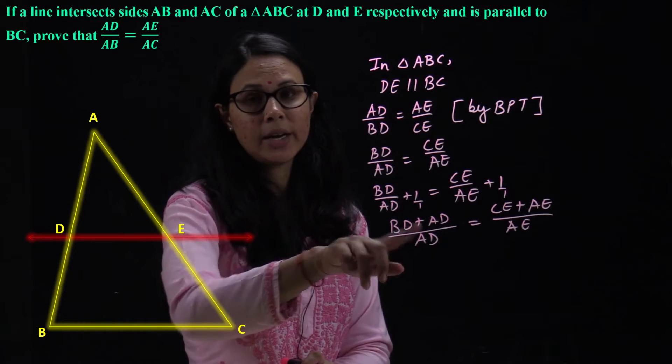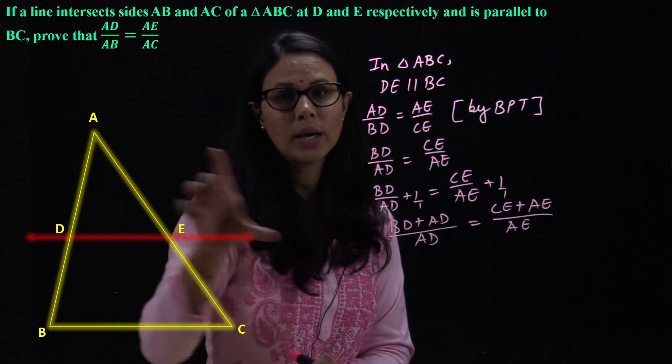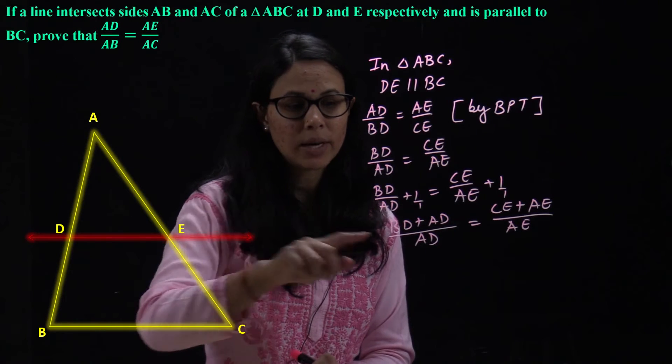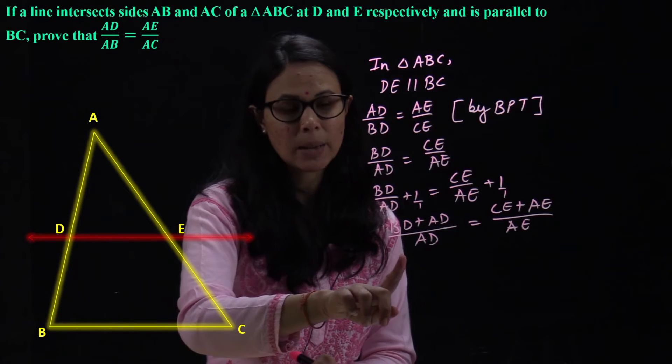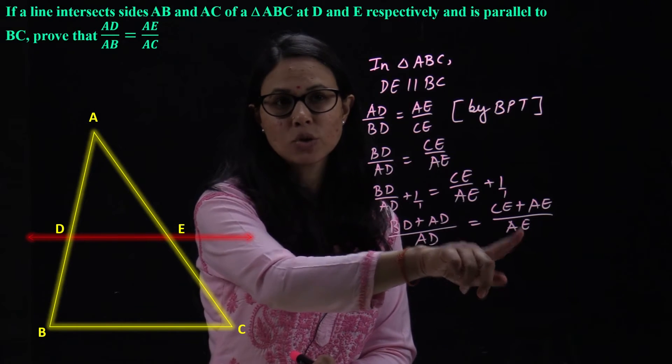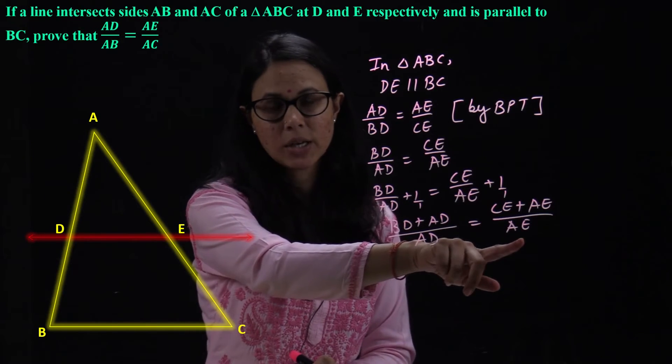So, here we have BD and AD add to form AB, and CE and AE add to form AC. So, we have BD and AD. Which we have to prove to you. We need AD and AE.